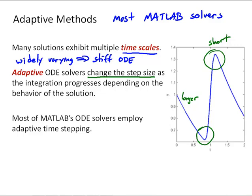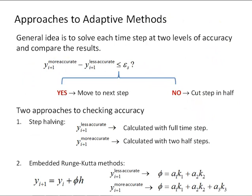So let's look at how this works. There's two basic approaches to adaptive methods. The general idea is to solve each time step in the solution at two levels of accuracy, and then compare the results. So we'd have a more accurate solution and a less accurate solution, and we could look at the difference between the two and compare them to some stopping criterion or tolerance.